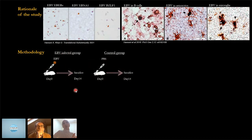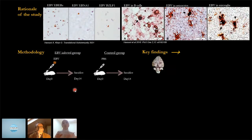We collected brain and spinal cord among other important tissues, and naturally you would want to know what happens in the CNS — what changes could occur as a result of the virus being in the bloodstream.